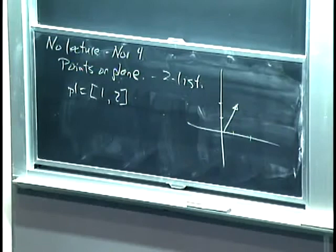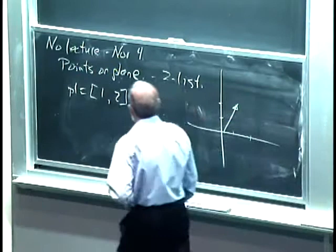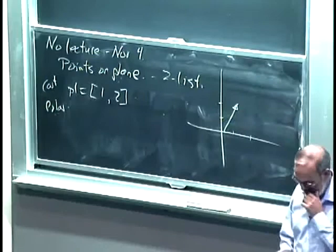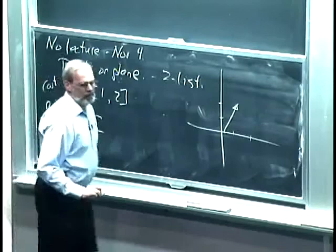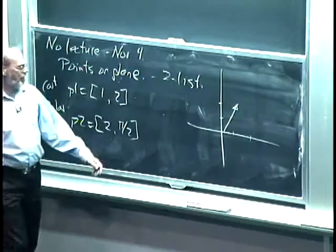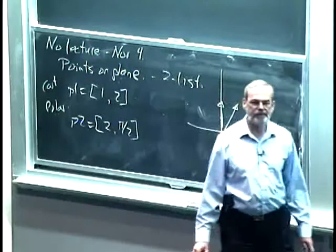There's another way to represent points on the plane, and that's in polar form. Instead of Cartesian coordinates, I've got a radius and an angle from the x-axis. So I might define P2 in polar form with radius 2 and angle pi over 2 — which is up along the y-axis, essentially the same point.